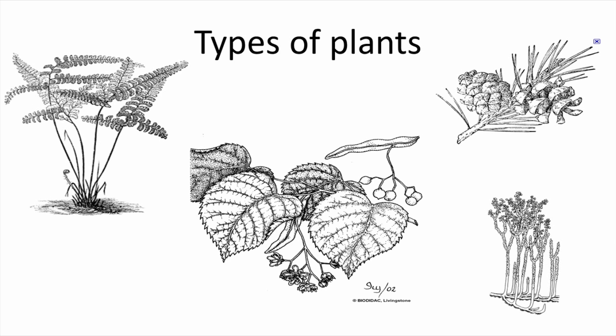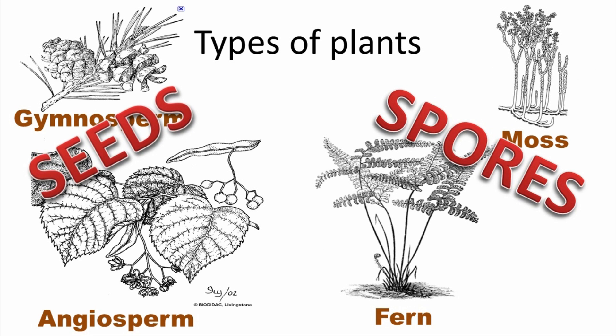What makes a plant a plant? One of the defining traits is that plants are able to make their own food through the process of photosynthesis — we'll talk about that later. Beyond that, there begin to be many characteristics that make plants different from one another. One way to look at it is by dividing our plants into those that reproduce by seeds and those that do not.